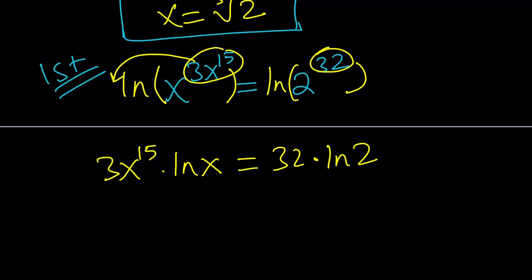Now, if we can compare 1 to 1 or do a 1 to 1 correspondence, that would be nice. For example, can x be 2? The answer is no. Because if x is 2, 3 times 2 to the 15th power does not equal 32. You see? It's not going to work.